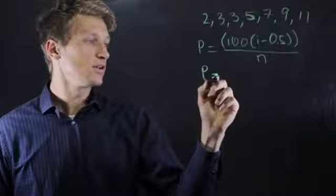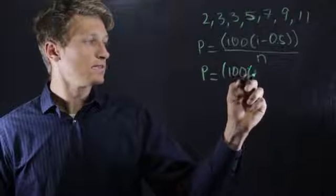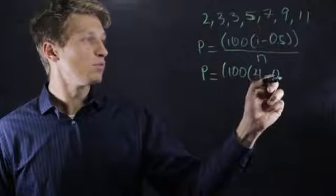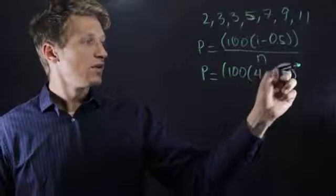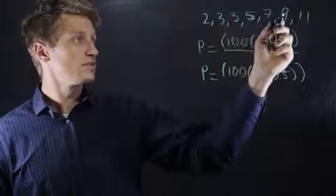so p equals 100 times 4 minus 0.5. And then we put n, which is the total number of numbers, 1, 2, 3, 4, 5, 6, 7.